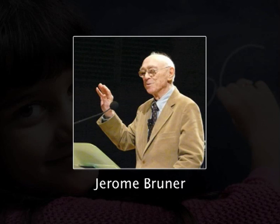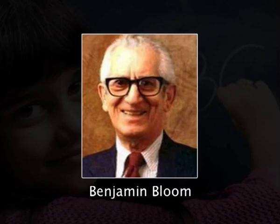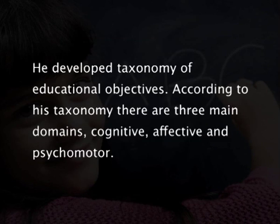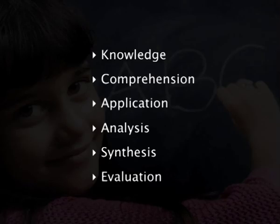Jerome Bruner advocated discovery learning based on Piaget's principles, where students are allowed to question, explore and experiment. He was also responsible for structuring subject matter in ways that were easy for learners to understand. Benjamin Bloom was another pioneer, who developed the taxonomy of educational objectives. According to his taxonomy, there are three main domains: cognitive, affective and psychomotor. The cognitive domain has six levels: knowledge, comprehension, application, analysis, synthesis and evaluation. The affective domain has five levels: receiving, responding, valuing, organizing and characterization.